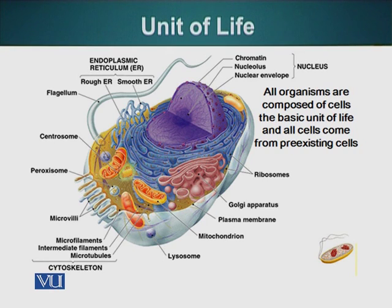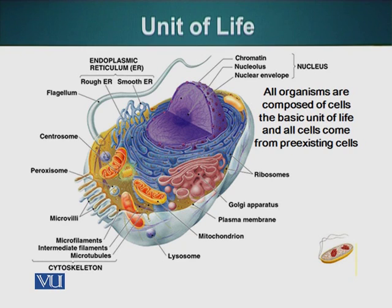Cells also have mechanisms for dealing with misbehaving proteins — proteins that are not doing their job properly. These are captured and put into a different type of organelle, which tries to reform them. If the proteins are reformed, they are allowed to continue their function in the cell; otherwise, they are degraded. The entities which grab these misfunctioning proteins are the heat shock proteins.